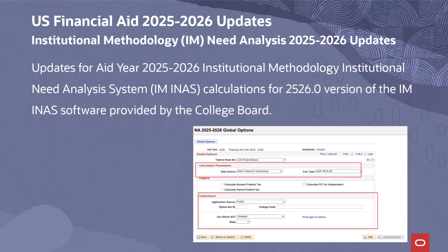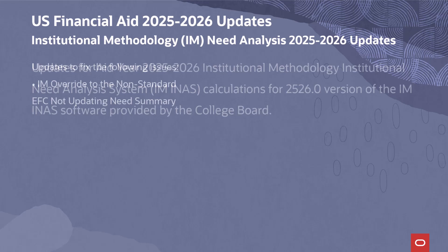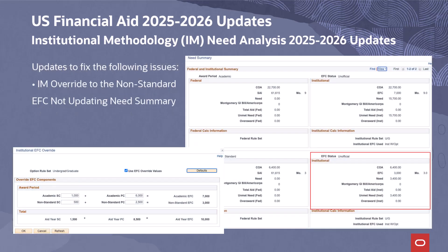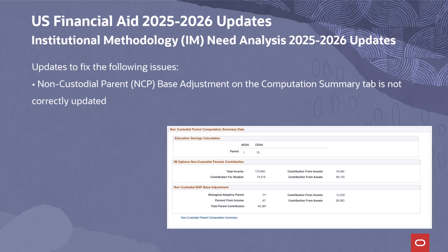Updates have been delivered to support Aid Year 2025-2026 Institutional Methodology Institutional Needs Analysis System calculations in alignment with the 25-26.0 version of the IM-INAS software provided by the College Board. The updates include modifications to records, pages, entities, and PeopleCode for Aid Year 2025-2026. Bug fixes have also been delivered, including: IM override to the non-standard EFC not updating needs summary, and non-custodial parent base adjustment information on the computation summary tab not correctly updated after invoking the INAS NCP calculation.